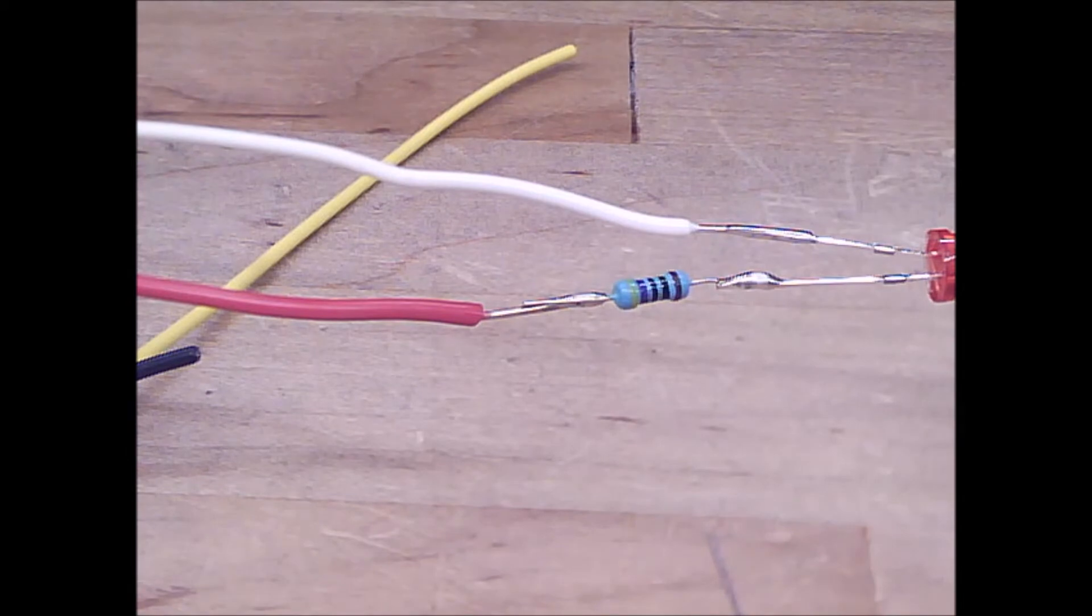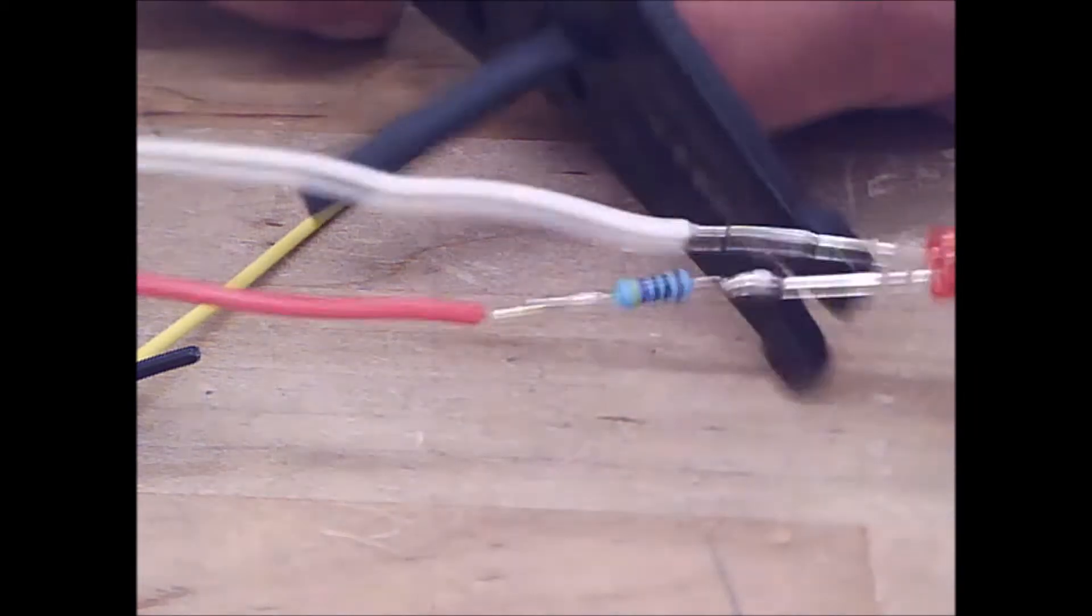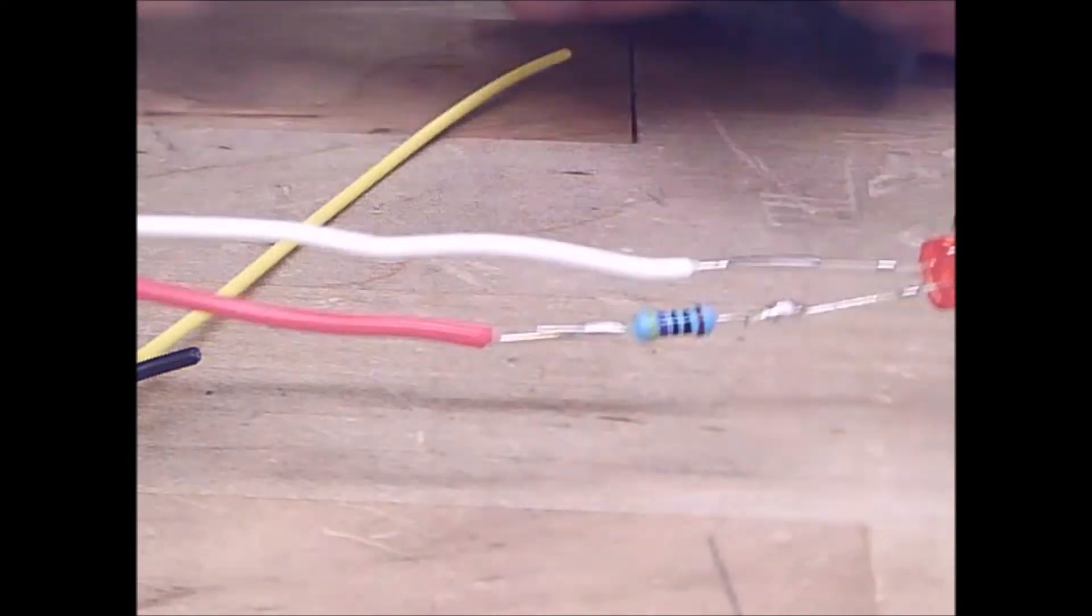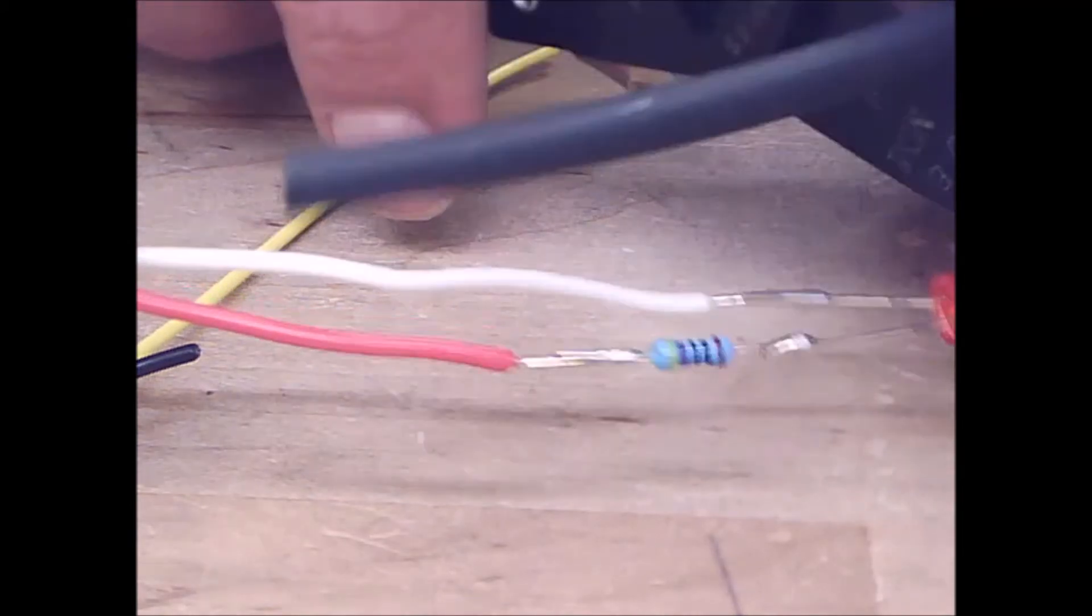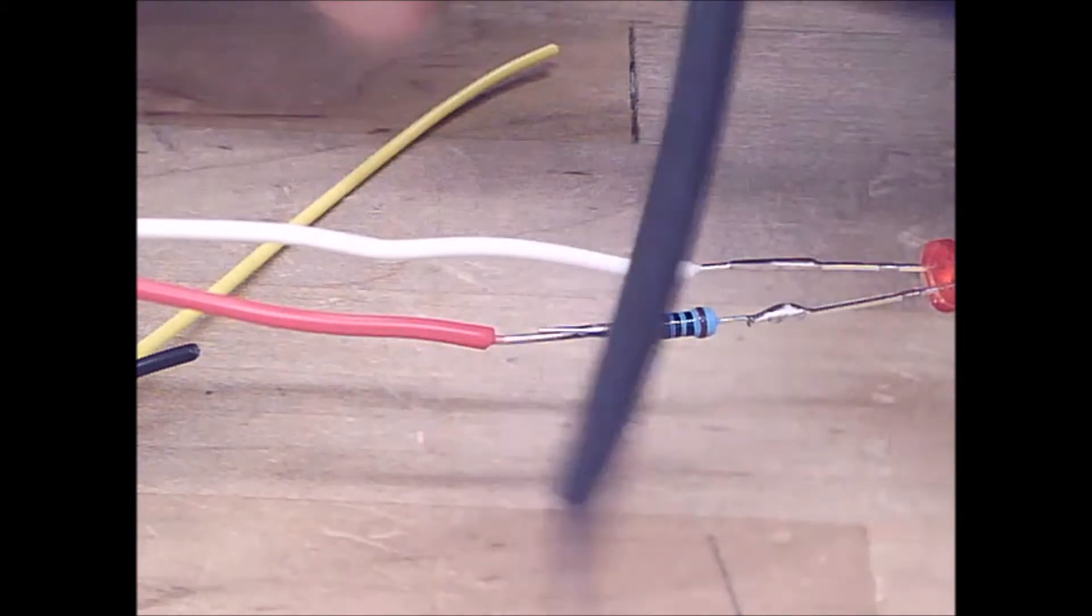Now the last thing we need to do, if you'd like to, is take some heat shrink and cover up our solder joints. I'm going to go ahead and cut two sections. Let's see. One. And this one I'm going to cut a little bit longer just to make sure I can cover the resistor. Excellent.